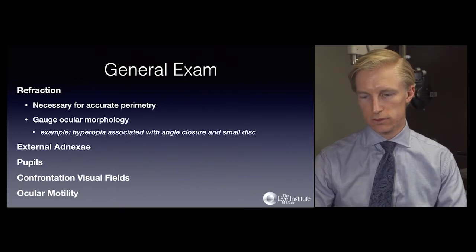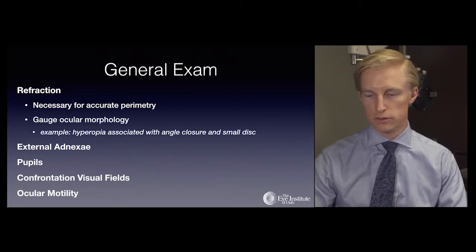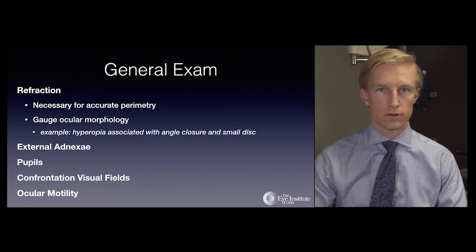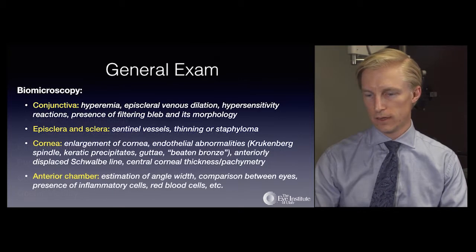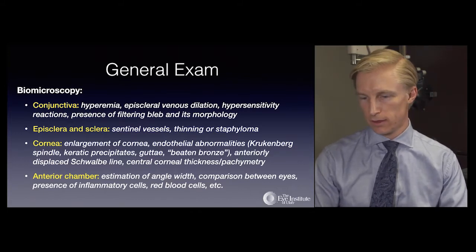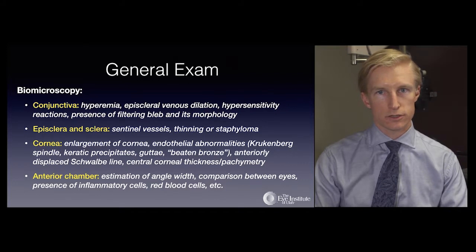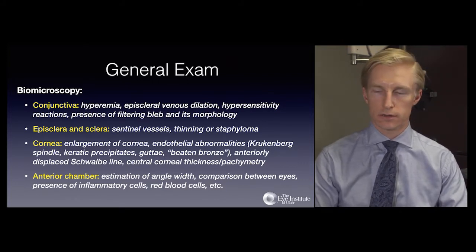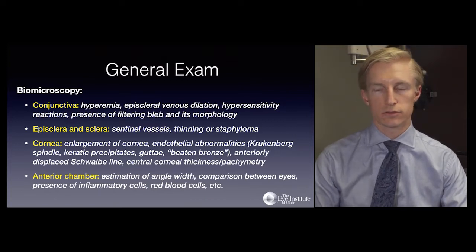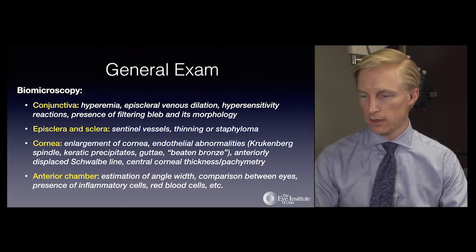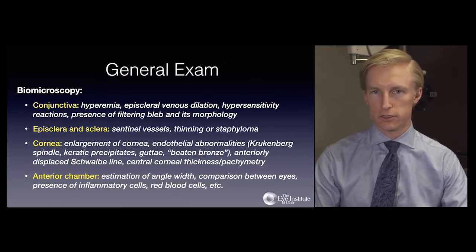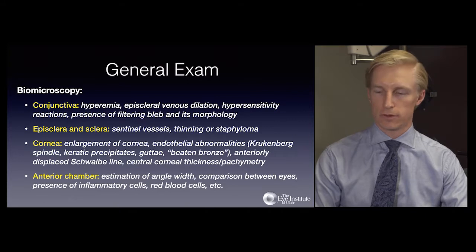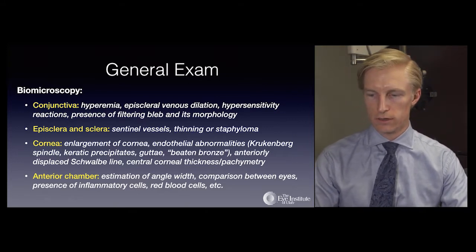The exam also includes assessment of the external adnexae, pupils with careful attention for any afferent pupillary defect, confrontation visual fields, ocular motility, and slit lamp biomicroscopy. Under the slit lamp, paying close attention to the conjunctiva, salient points include any evidence of conjunctival hyperemia, episcleral venous dilation, hypersensitivity reactions, and characteristic changes associated with ocular allergy including to topical medications, as well as the presence of any previous surgery including a filtering bleb.